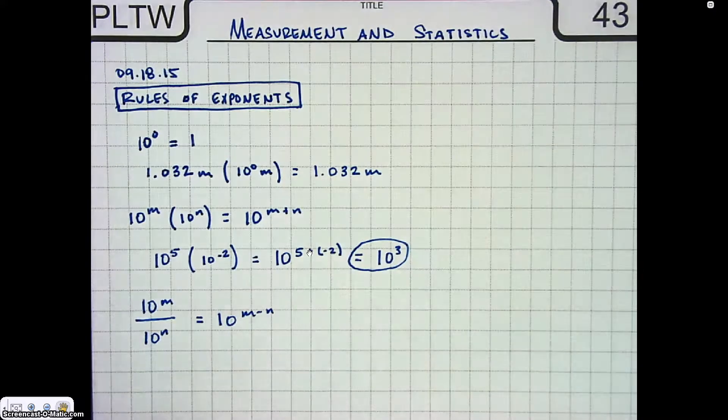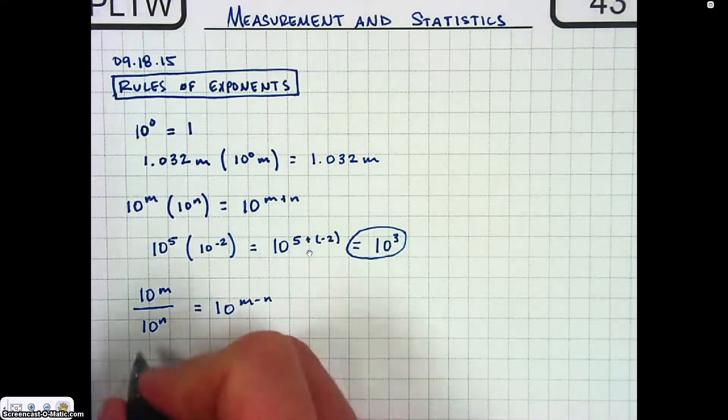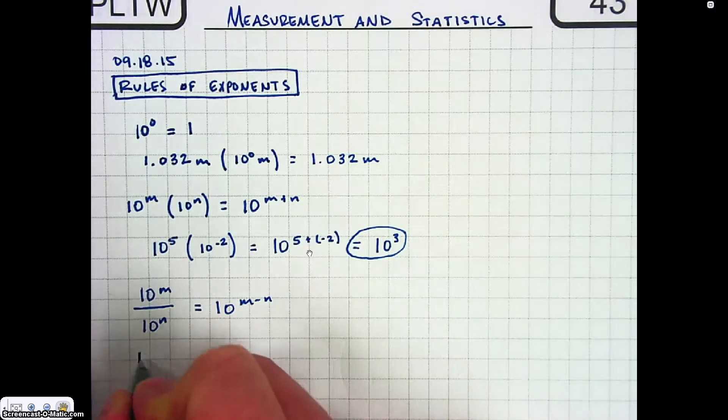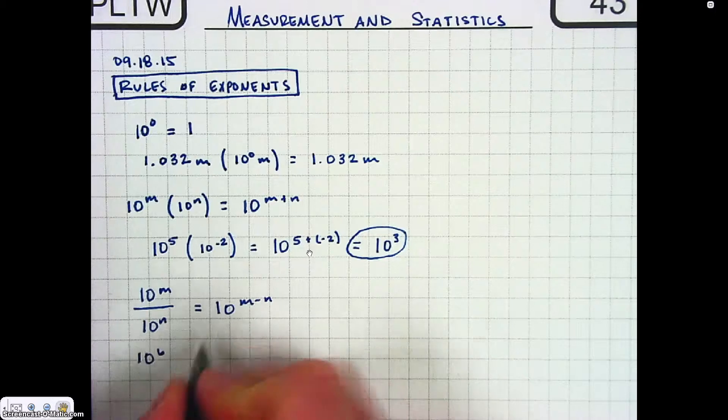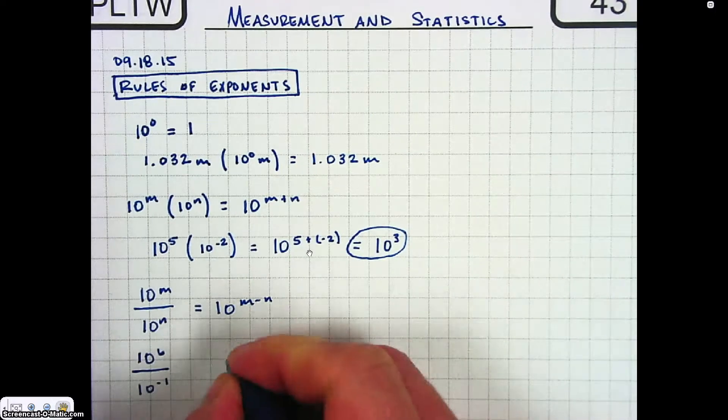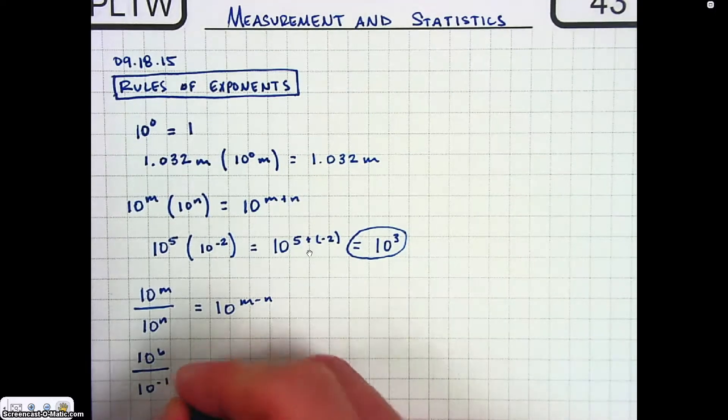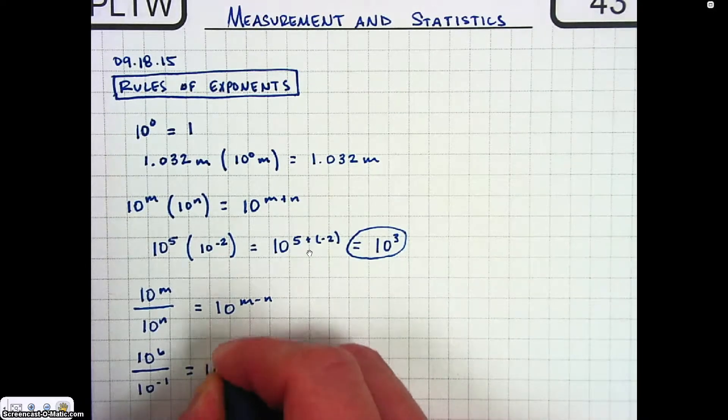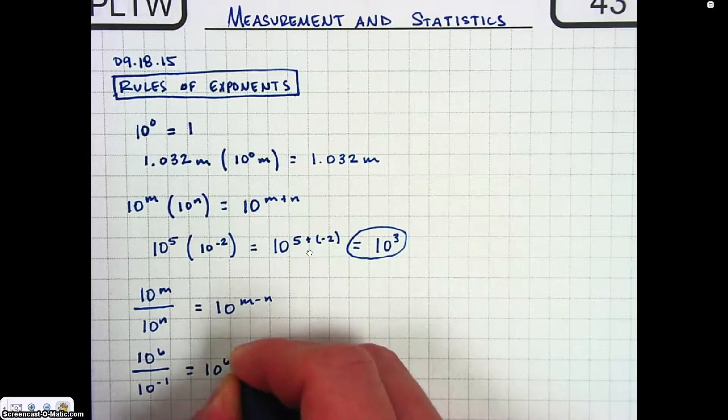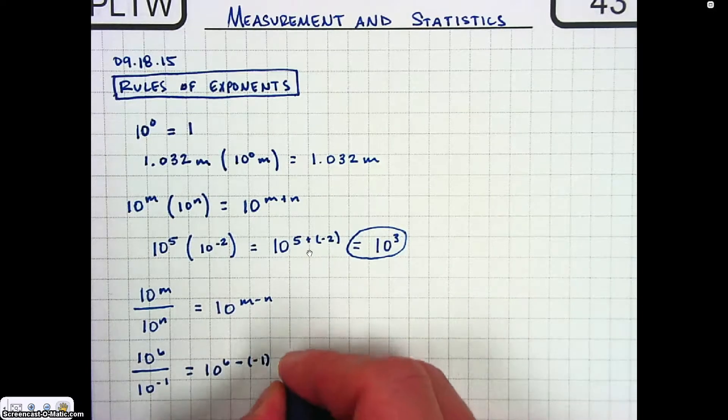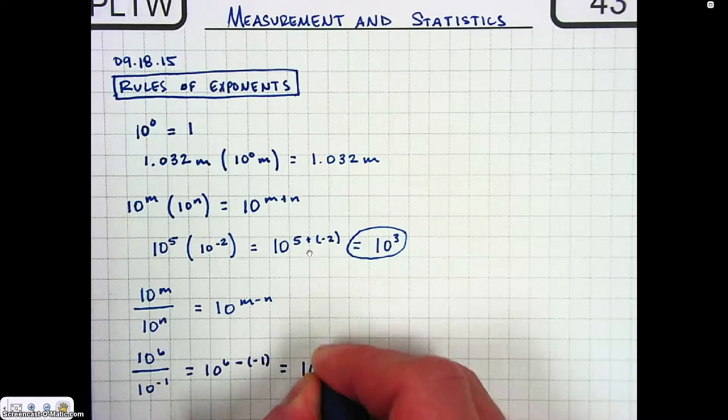And so if we use our example again, let's use a different example. Let's say we have 10 to the 6 over 10 to the negative 1. So if we're trying to solve that, it is 10 to the 6 minus the negative 1, which gives us 10 to the 7.